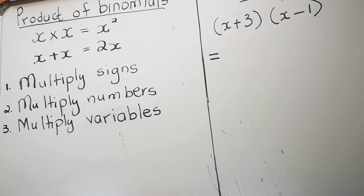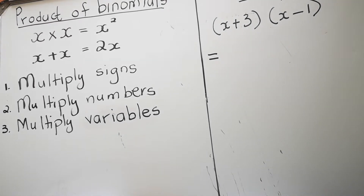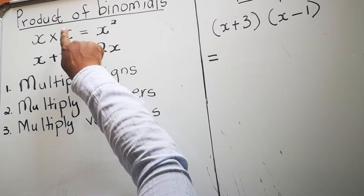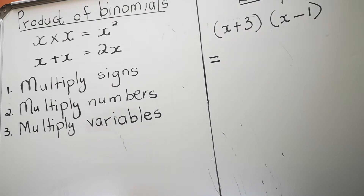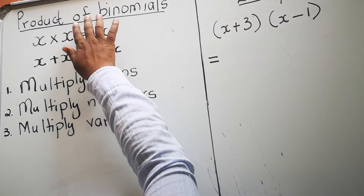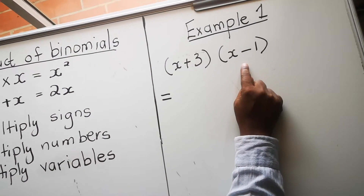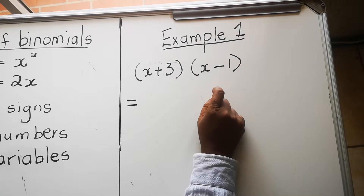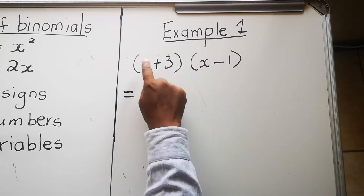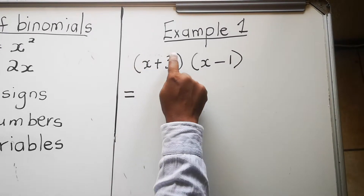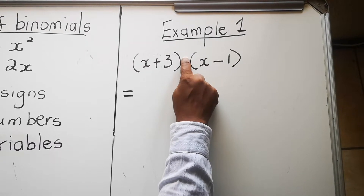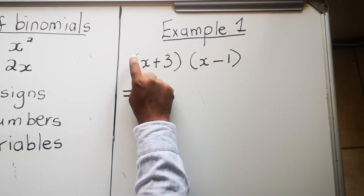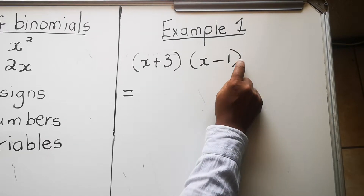Hello everyone, today our lesson will be on product of binomials. I'm going to explain these terms first using an example. The word 'product' means multiply, so when you have brackets like that with no sign between them — no plus or minus — it means we are multiplying this bracket with that bracket.